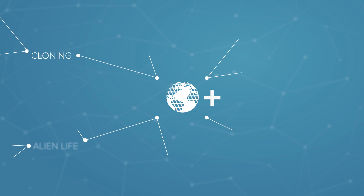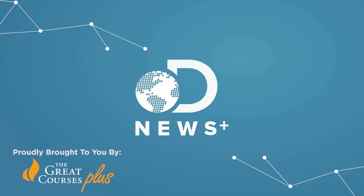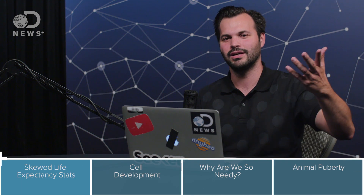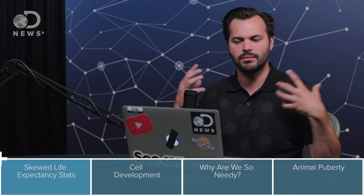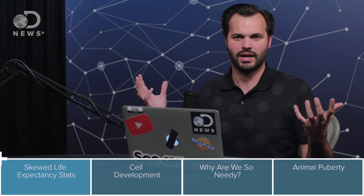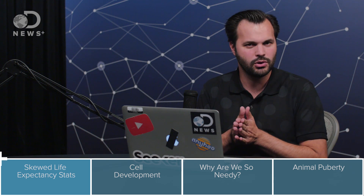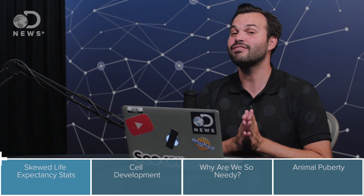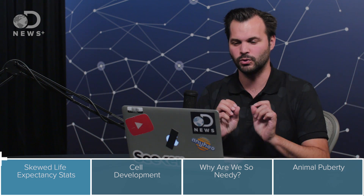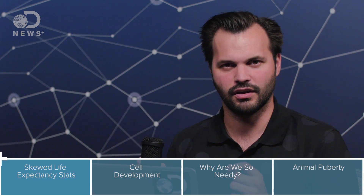Hey everyone, thanks for tuning in to DNews Plus today. I am Trace, and this is our first episode in a series of three on puberty. Puberty happens to everybody, and so we wanted to know what it is all about. Make sure you subscribe so you get all the episodes in this series. You can check us out on SoundCloud and iTunes if you just want to hear. What we're going to learn this week is how puberty comes about exactly, why aren't we born ready to reproduce, do animals go through puberty, what things affect the onset of puberty, and even if we can reverse the effects of puberty. But first, let's talk about the evolution of puberty.